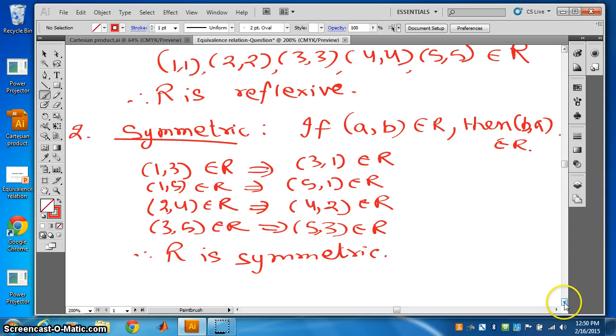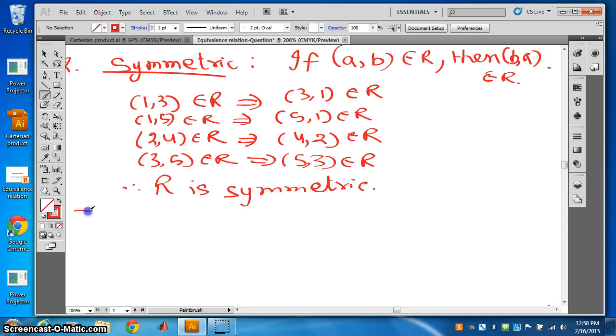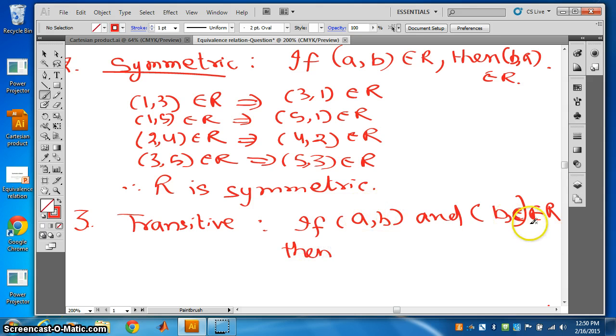Now the third property is transitive. Let's check for transitive. What is transitive property? If (a,b) and (b,c) belongs to R, then the first and the last, (a,c), should also belong to R.